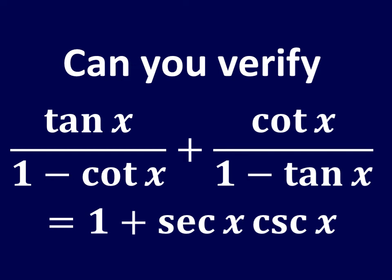In this video, we will learn to verify the given identity: tangent of x upon 1 minus cotangent of x, plus cotangent of x upon 1 minus tangent of x, is equal to 1 plus secant of x times cosecant of x.